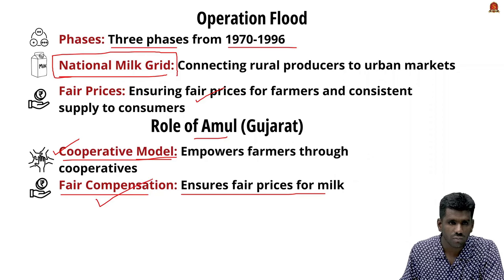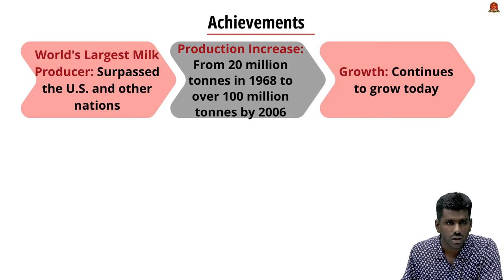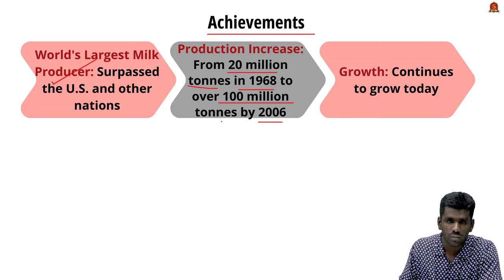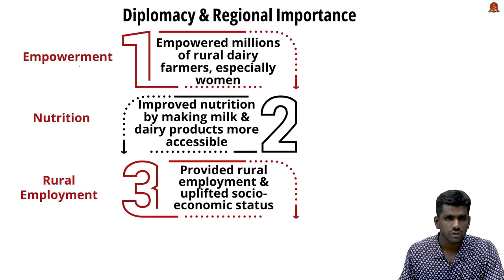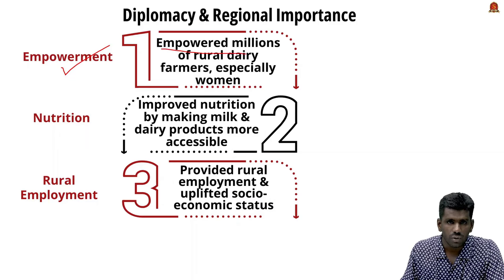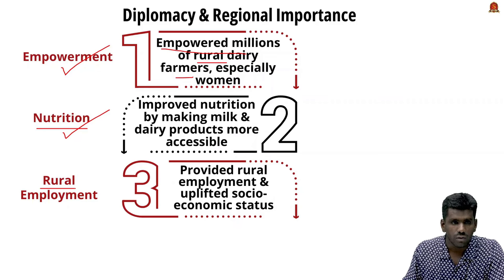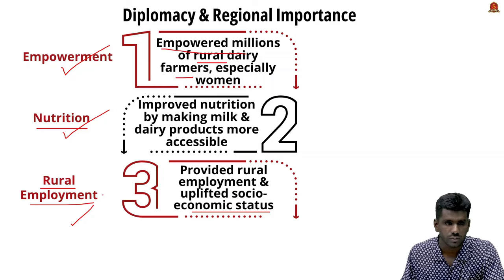The achievements of the White Revolution are significant: India became the largest milk producer in the world, with production increasing from 20 million tons in 1968 to 100 million tons by 2006. Last year India produced 220 million tons of milk, ranking number one globally. The revolution also introduced improved cattle breeding, high-yield cattle breeds, artificial insemination, and modern technologies in milk production. Socio-economic impacts include women's empowerment, improved nutrition levels in rural and urban households, rural employment, and upliftment of rural socio-economic status.